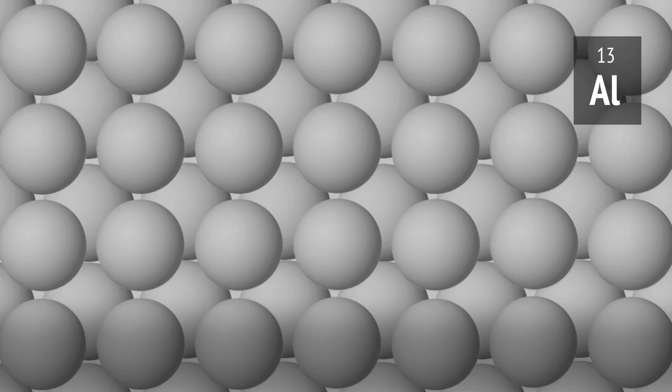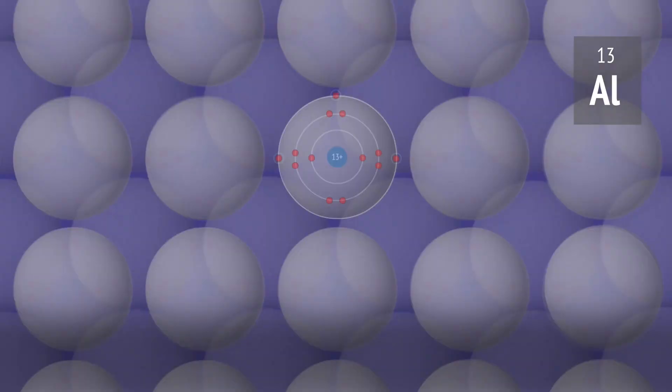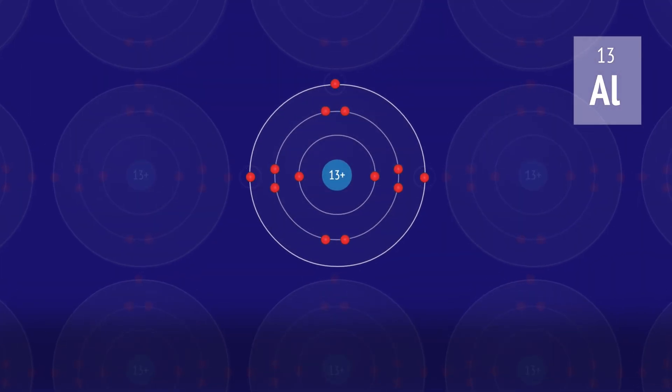To understand the atomic bonding that holds this lattice together, we need to consider the electrons of the metal atoms. Metals have only a weak hold on their outer, or valence, electrons.